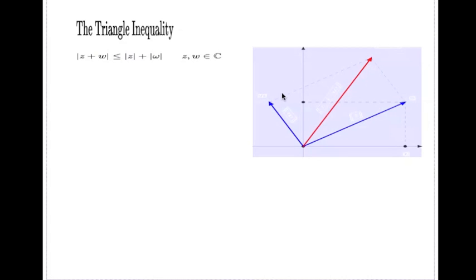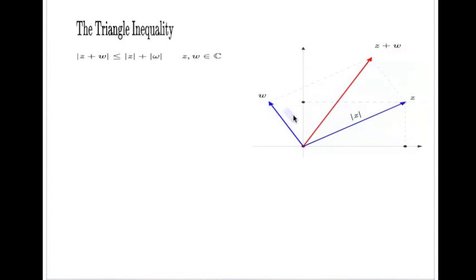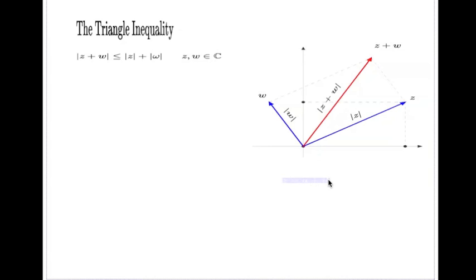On this diagram, this is my number z and this is my number w. When we add these two numbers together, z plus w is found by the simple parallelogram rule on vectors. If I put the absolute values on this diagram, then the absolute value of z is the length of this vector, and the absolute value of w is the length of this vector.